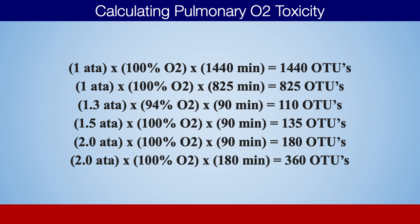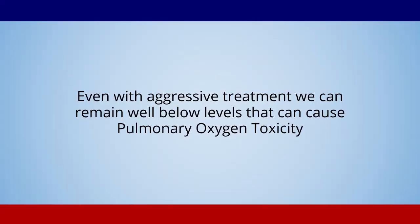So even with a pretty aggressive treatment plan, you are still typically very well below pulmonary oxygen toxicity limits — and even well below the 825 units where vital capacity could be reduced by up to 4%. The point is: you need to know these numbers. You need to know what central nervous system oxygen toxicity is, and you should definitely know what pulmonary oxygen toxicity is and how to keep your patients safe. As you can see, even with relatively aggressive hyperbaric sessions, we are nowhere near pulmonary oxygen toxicity.